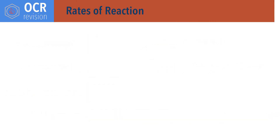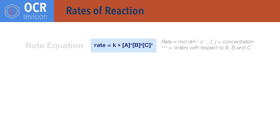For rates of reaction. Rate equals K times concentration of reactants times each other, with each raised to the power of the order of reaction with respect to that reactant. Rate has units of moles per decimetre cubed per second. K is the rate constant with different units depending on the reaction, and concentration is given in moles per decimetre cubed.